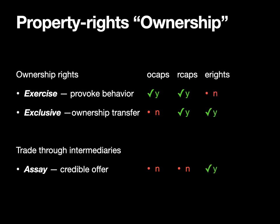The e-rights framework, which we've been developing for a long time, provides for the exclusive transfer of ownership and for the credible assay, but it does not provide for exercise. It's only the transfer of symbolic rights. What we need is to support all three properties together in order to get offer-safe trade of mutable objects.